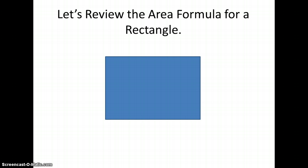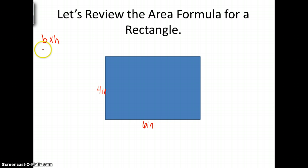Let's review the area formula for a rectangle first. The area formula is base times height, so if I have a base of 6 inches and a height of 4 inches, I simply need to substitute my base and height into the formula and get 6 times 4, which is 24 inches squared. We always use our units squared for area because we are actually counting how many squares fit in a particular space.